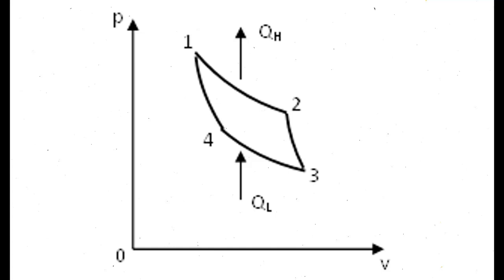The reversed Carnot cycle consists of two isentropic and two isothermal processes. The process undergoes in direction 3-2-1-4-3.